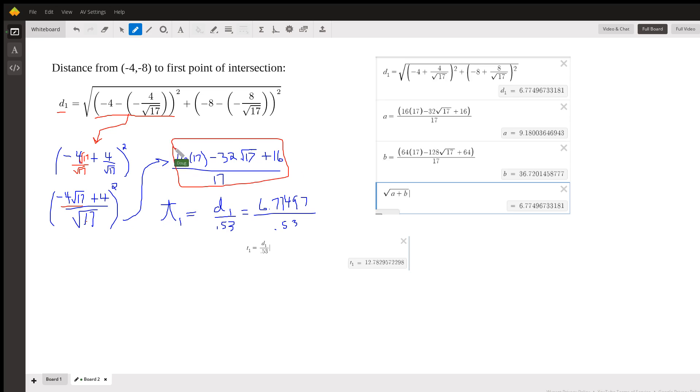So that is the value of this first term, and I could do similarly for this one right here, which is what I've done over here, just to give you an idea of how to evaluate this. And finally, the square root of (a + b), that is the distance from (-4, -8) to that first point of intersection with the asteroid field.